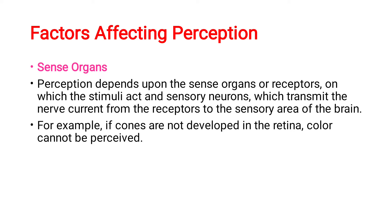If you have not watched that video, I have given the link in the description box, suggested end card, as well as eye cards. So what are the factors affecting perception? First, your sense organs are very important in order to have interpretation of the stimuli or correct perception of the stimuli. Perception depends upon the sense organs or receptors on which the stimuli act and sensory neurons which transmit the nerve. Your nervous system as well as your sense organs should be very good in order to have good perception.